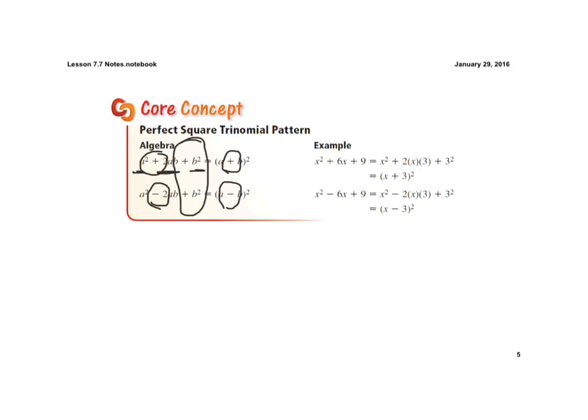So if we look at the examples they give us here, we have x squared plus 6x plus 9. x is squared, 3 is squared, and the middle term is 2 times x times 3. So now it's a perfect square trinomial, and I can write it as x plus 3 all to the second power.